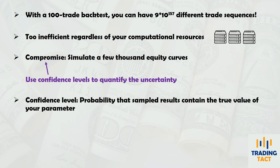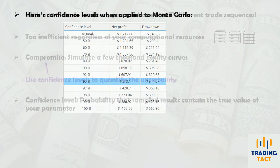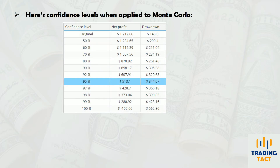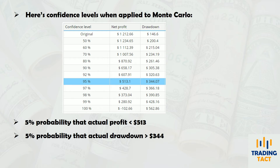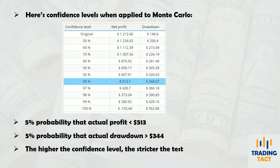A confidence level refers to the probability that the sampled results contain the true value of a certain parameter. When applied to Monte Carlo simulations, confidence levels will produce results like the one shown. If you use a 95% confidence level, it means there is a 5% probability that the actual profit will be smaller than $513, and that the drawdown will be larger than $344. The 95% level is most commonly used in trading and the scientific literature. The higher the confidence level, the more the metrics will deteriorate, but the higher the probability that those metrics will encompass your future performance.